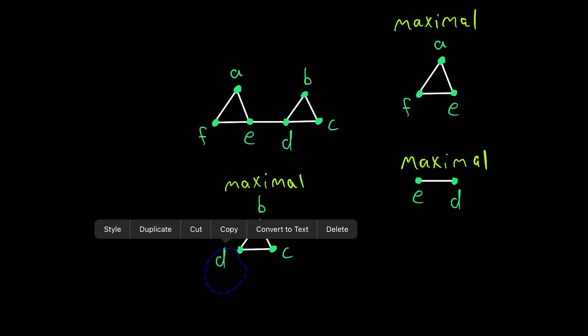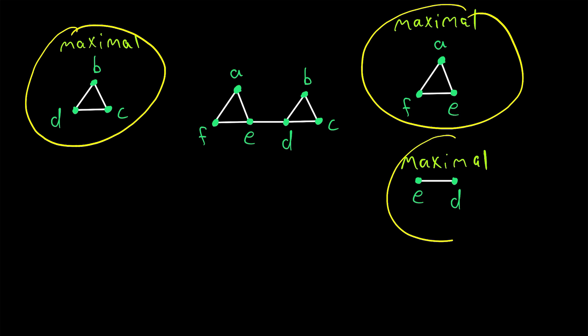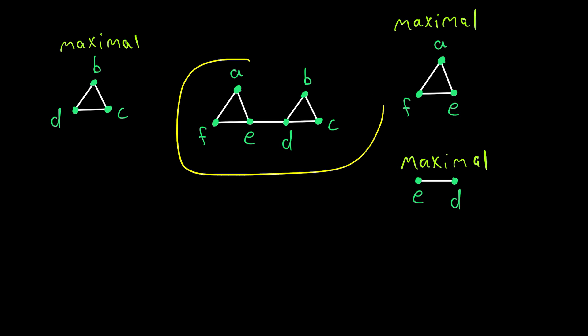Now, we can be sure that we have found all maximal cliques of the graph, because the union of these three maximal cliques is the entire graph. Thus, we can be sure that whichever of these maximal cliques have the most vertices, those are the maximum cliques of the graph. In this case, we have two maximum cliques. Both of these cliques have three vertices, which is greater than the only other maximal clique, which has two vertices.